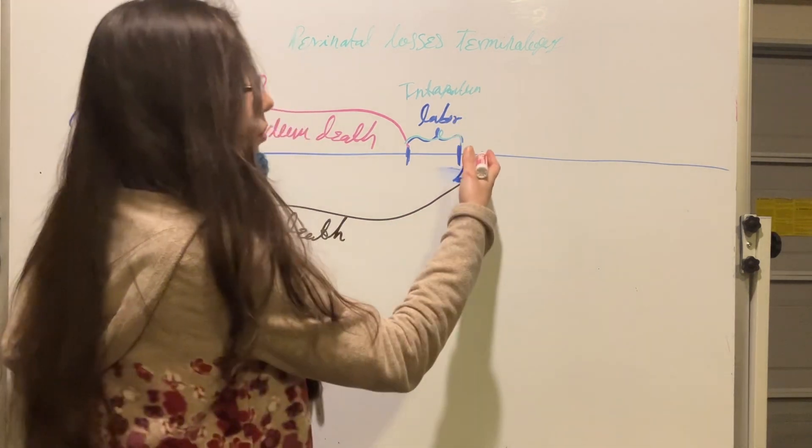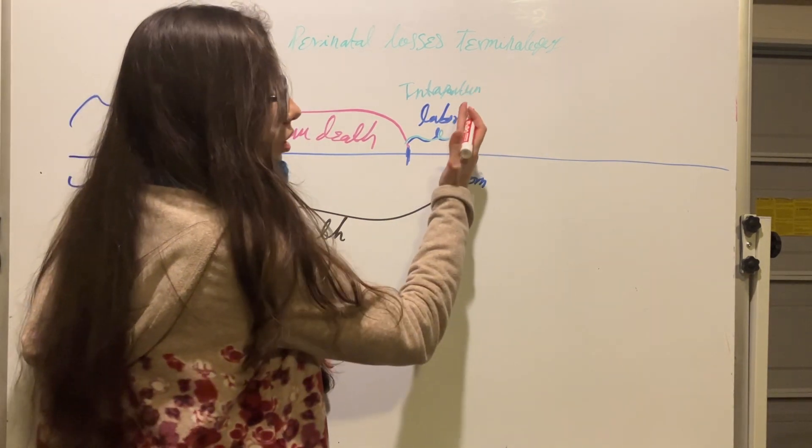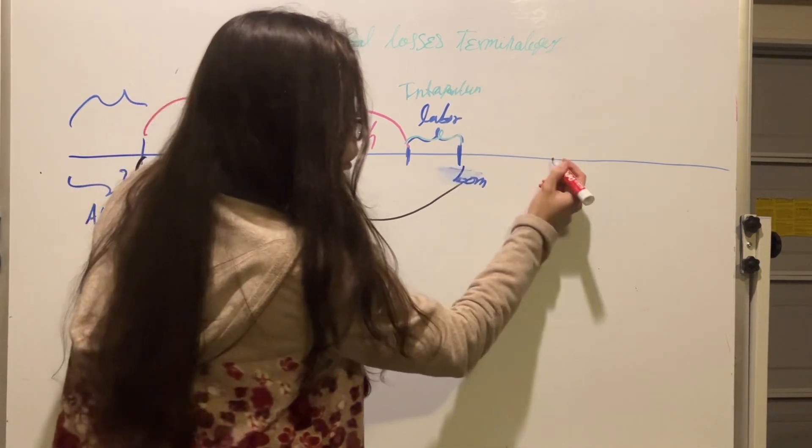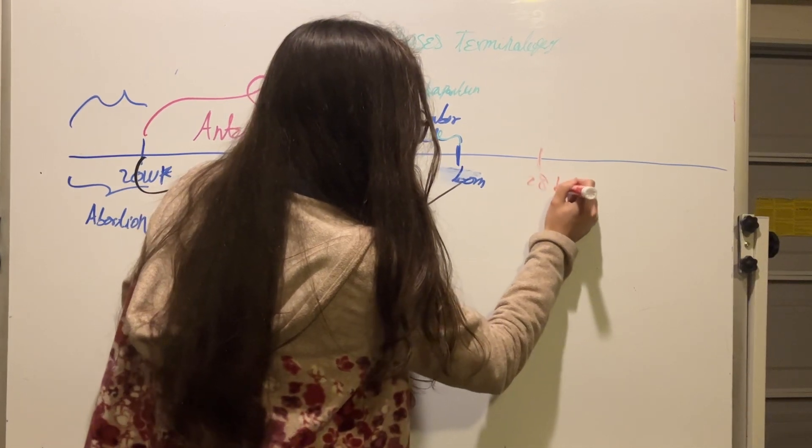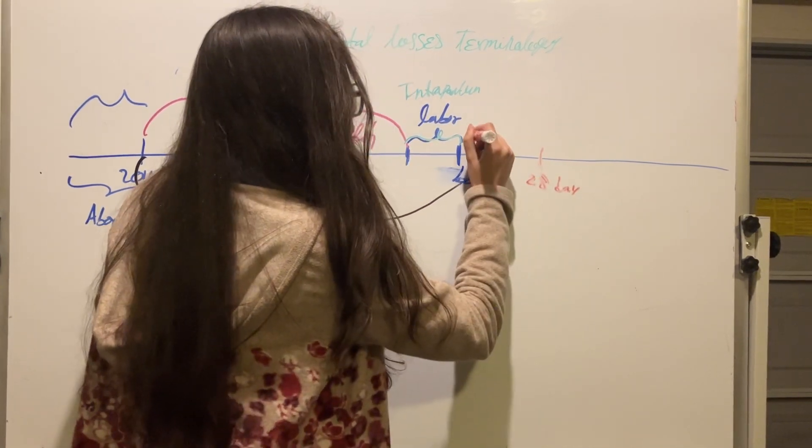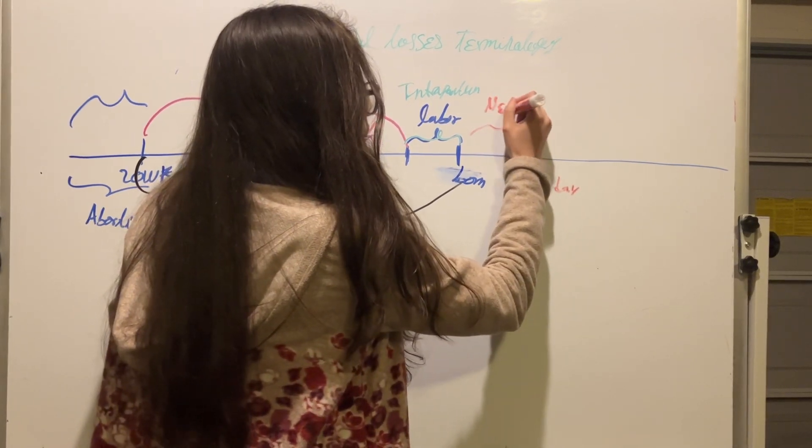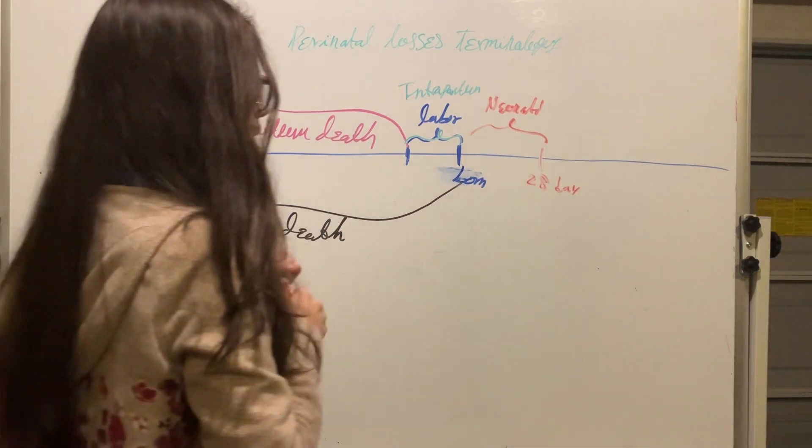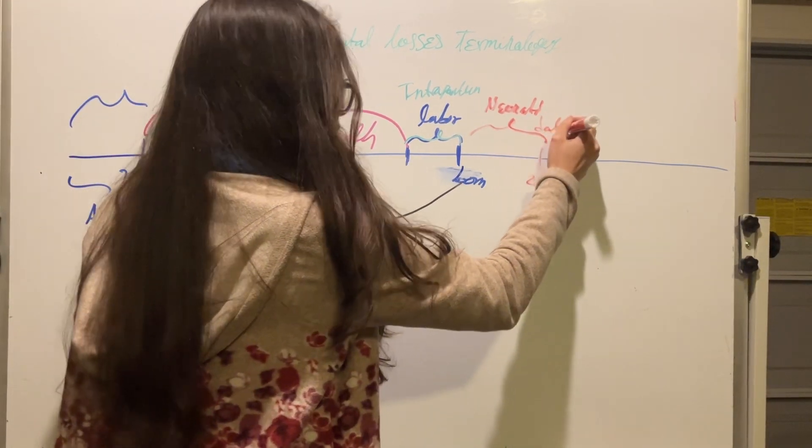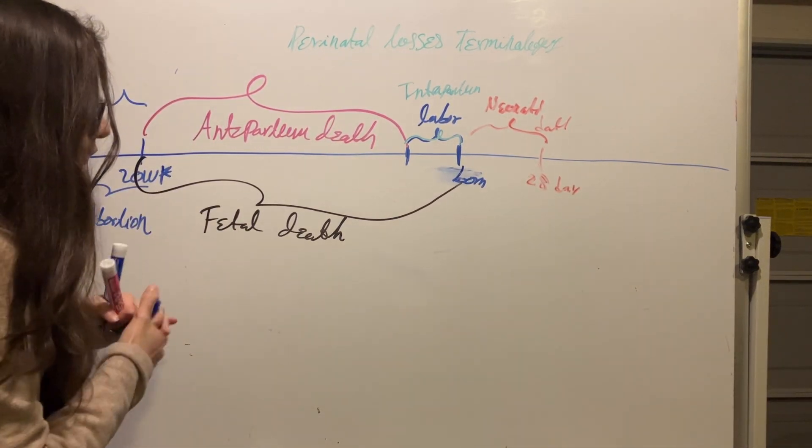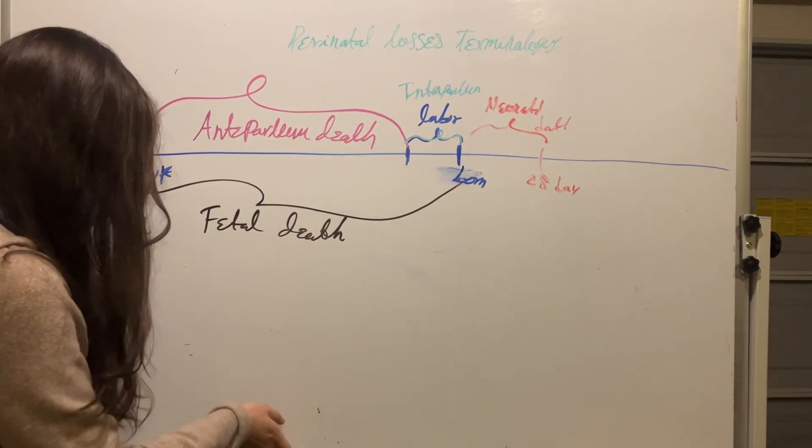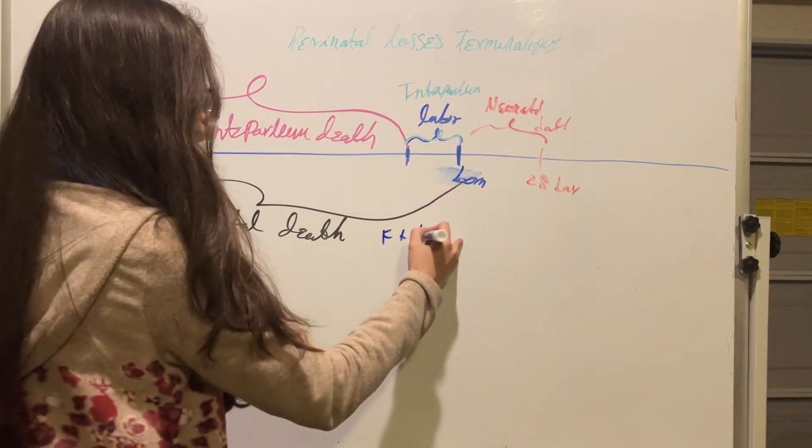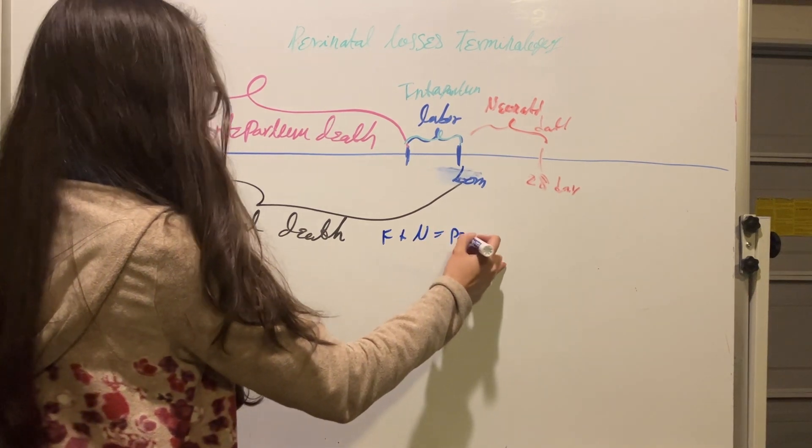Then, if the baby is born and if we have death of the baby, starting from when the baby is born up to 28 days, this is neonatal mortality. And the combination of fetal death plus neonatal death, this is perinatal death.